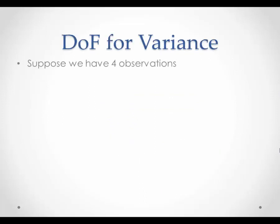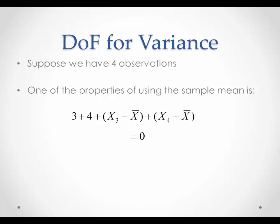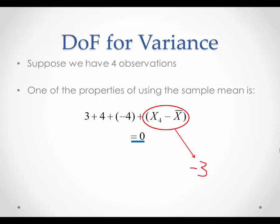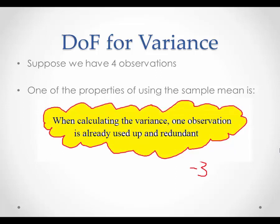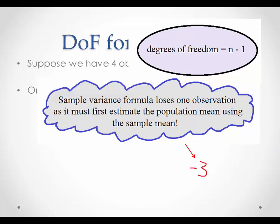Now let's look at the degrees of freedom for calculating the sample variance. When calculating the numerator of the sample variance, one of the properties of using the sample mean is that the sum of each observation minus the sample mean equals zero. So (x1 minus x-hat) plus (x2 minus x-hat) and so on equals zero — this is a mathematical tautology. Suppose we know the first term is 3, the second is 4, and the third is negative 4. Given this relationship, we know these terms must sum to zero, so the last term must be negative 3. Because the sample mean has already been calculated using the observations, when calculating the variance, one observation has already been used up and is now redundant. So the degrees of freedom is n minus 1. The sample variance formula loses one observation as it must first estimate the population mean using the sample mean.